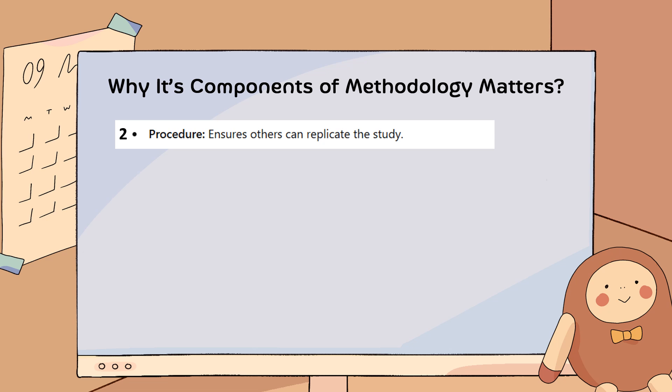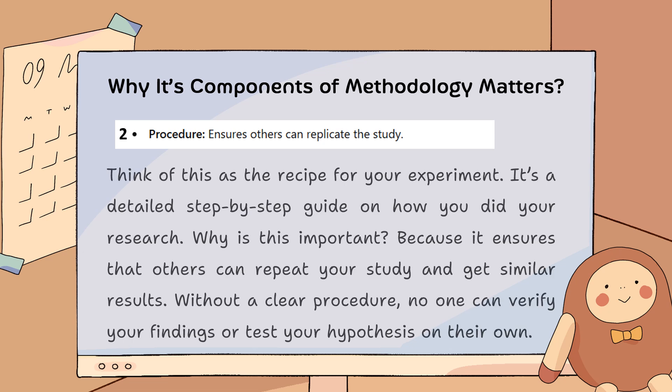Second, procedures ensure others can replicate the study. Think of this as the recipe for your experiment — it's a detailed step-by-step guide on how you did your research. This is important because it ensures that others can repeat your study and get similar results. Without a clear procedure, no one can verify your findings or test your hypothesis on their own.